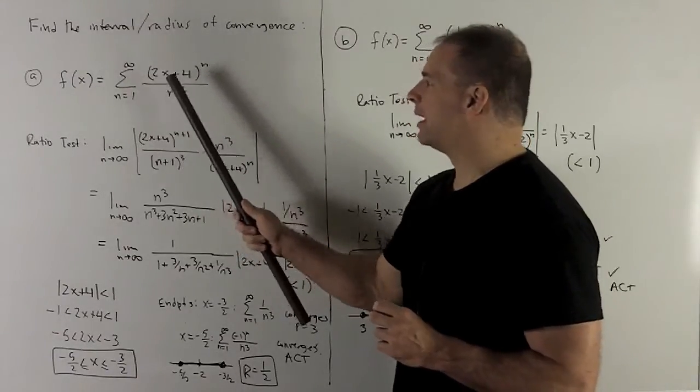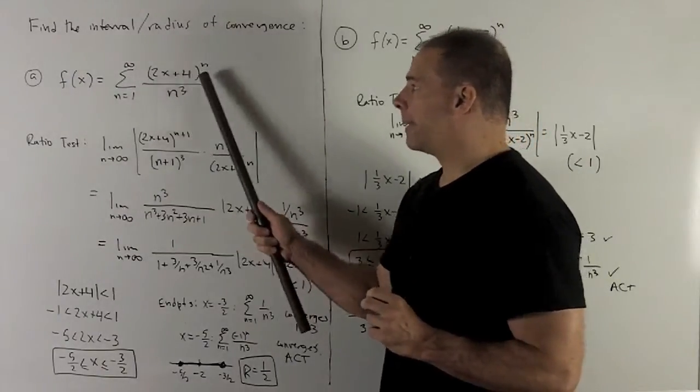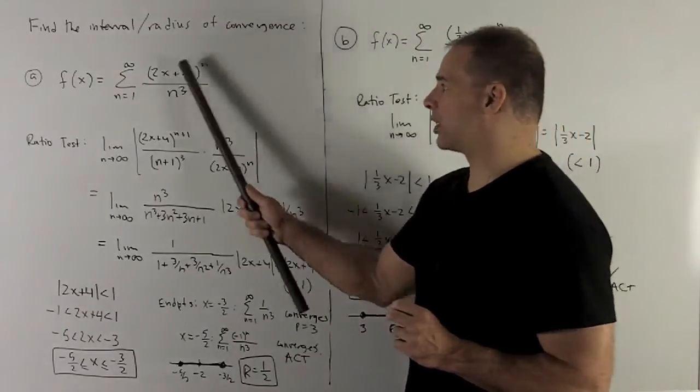So even though it may not be clear that this is an x plus 2 here, I could factor that 2 out, and that would be a 2 to the nth power out in front of everything. So center is going to be x minus minus 2. Center is the minus 2.